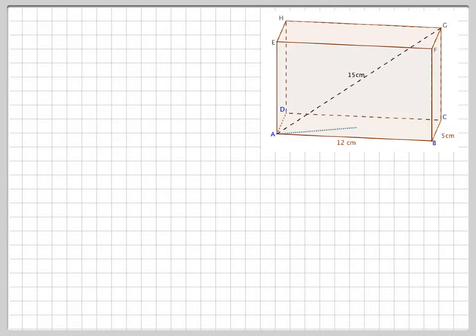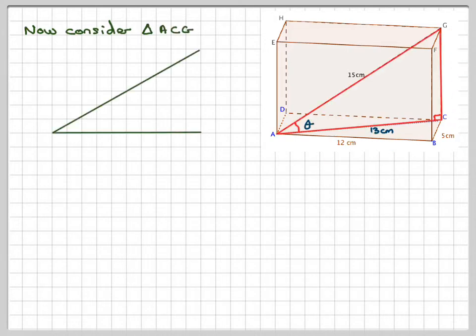Right, now that I've got that length as 13 cm, I can now use the triangle ACG, which is that one, and again drawing it out in 2D. It's always a good idea to do that. ACG. The angle that I want to find will be this angle here. This side is 15, this is 13.